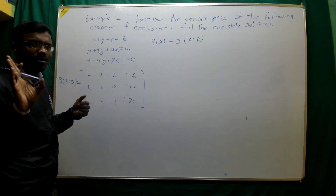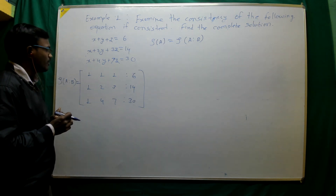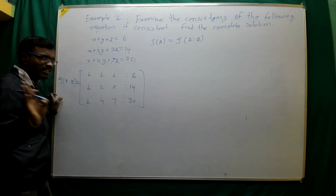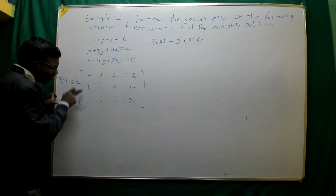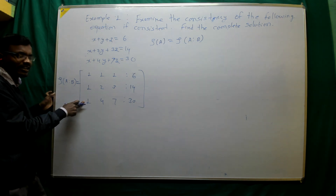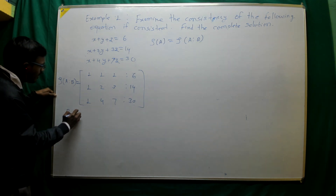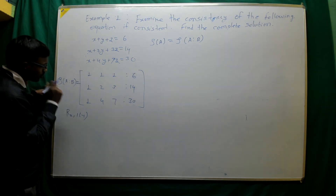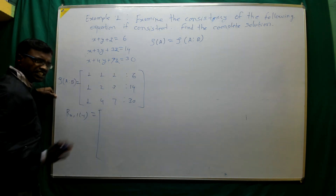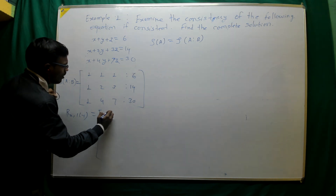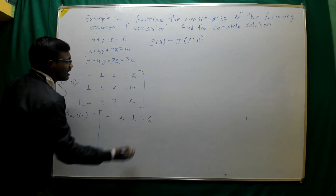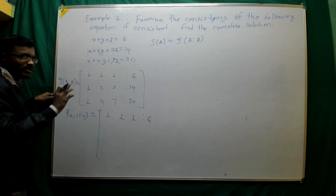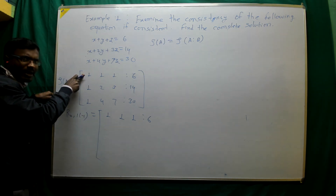Now we find the rank of this matrix by elementary row operations. The leading entry is 1, and we apply row operations to get the row echelon form.